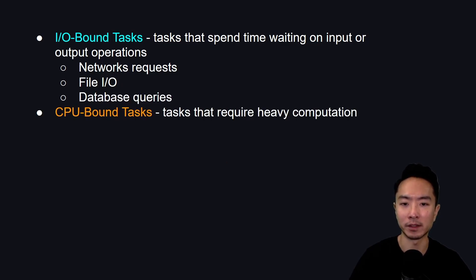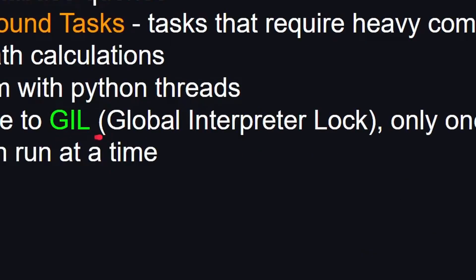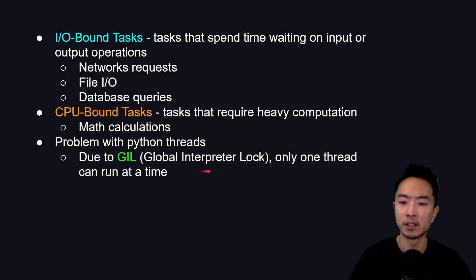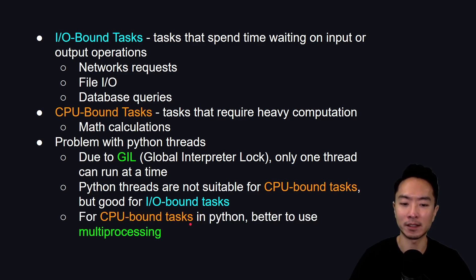You also have CPU-bound tasks, which usually require heavy computation — for example, math calculations. There's a known problem with Python threads called the GIL, or global interpreter lock. What this does is it only allows one thread to run at a time, so there's not really true parallelism. In general, Python threads are not good for CPU-bound tasks, but for input-output-bound tasks where you're waiting for things, they're pretty suitable. For CPU-bound tasks in Python, it's probably better to use multi-processing, which we'll go over at the end of this video.